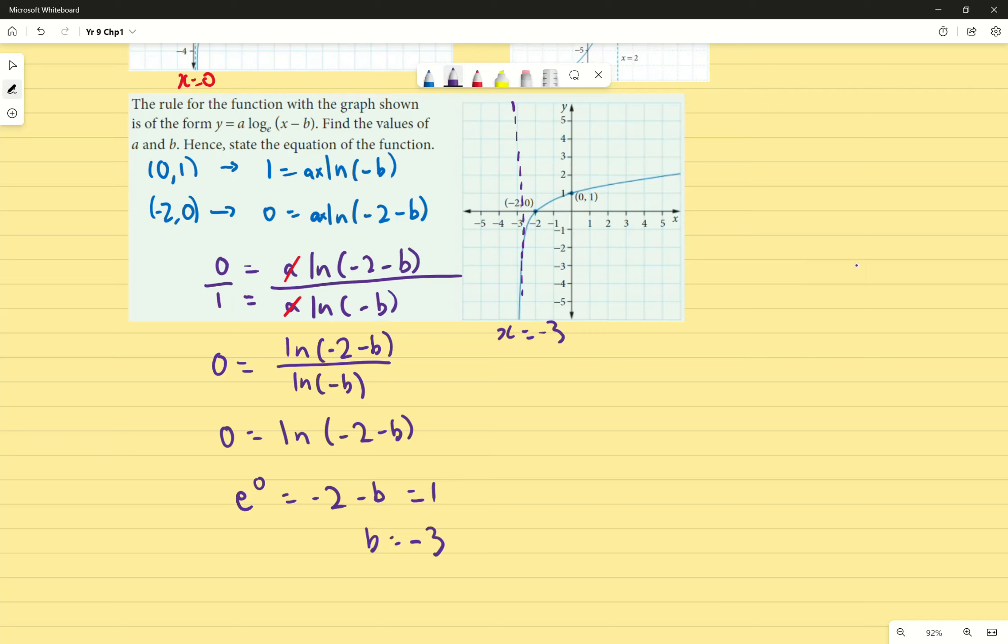And then we end up with 1 equals a times ln of 3. I'm substituting my value back in into this one right there. And we end up with a equals 1 over ln of 3. So when the equation is to state the function or the equation of the function, we don't just leave it there. Because it's a times ln of x minus b, it becomes ln of x plus 3 over ln of 3. A little bit of a couple of extra steps, but it's important that we make sure that we read the question properly and finalize our response as necessary.